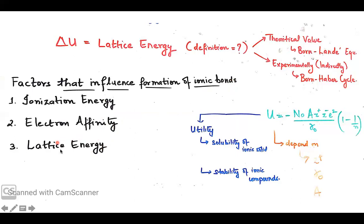The third contributing factor is lattice energy. A high lattice energy will always favour the formation of ionic compounds, as we saw through the discussion earlier. Higher the lattice energy, higher the feasibility of formation of ionic compounds, and the stability of the ionic compounds can also be decided on the basis of lattice energy.